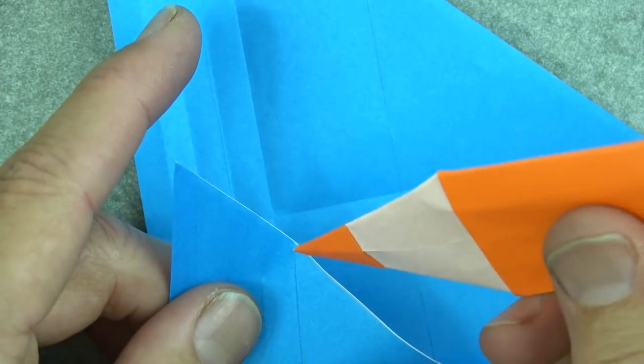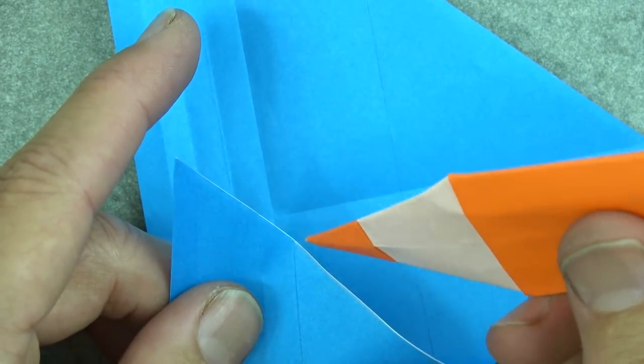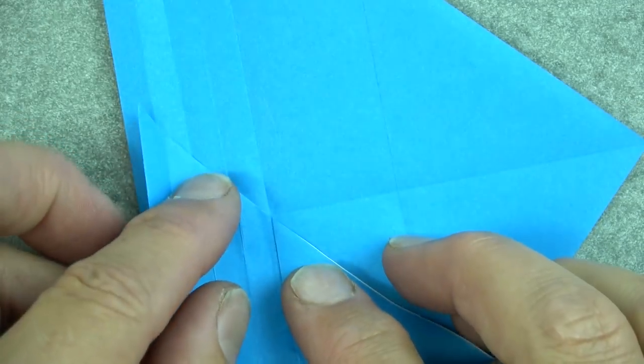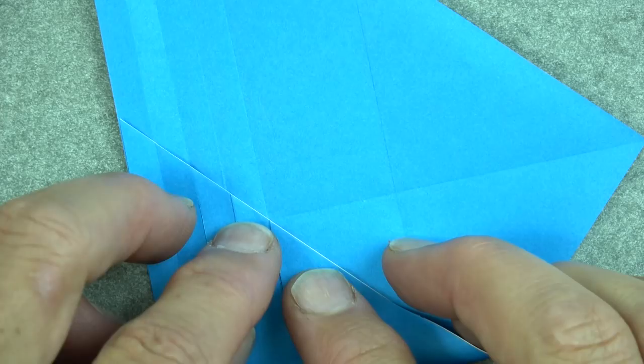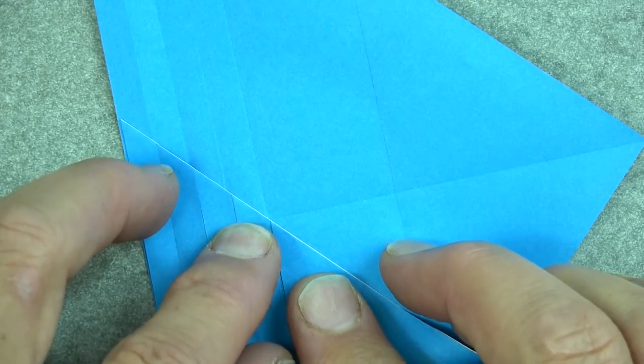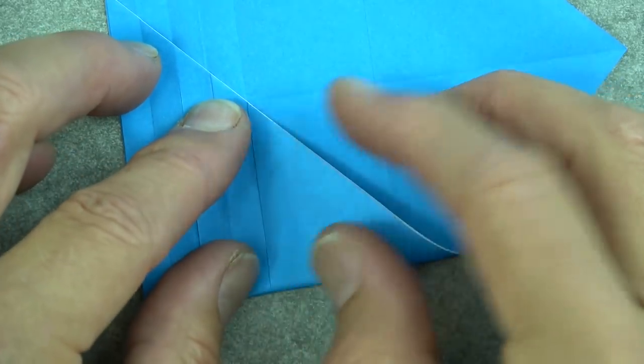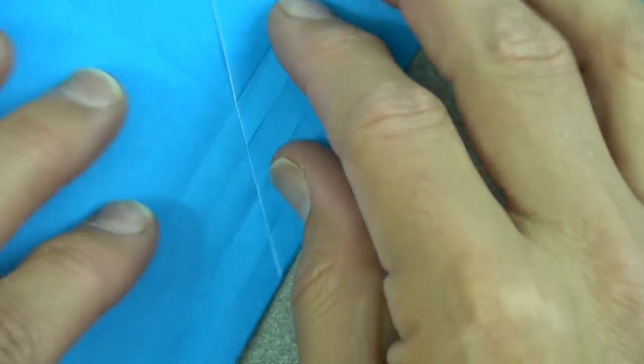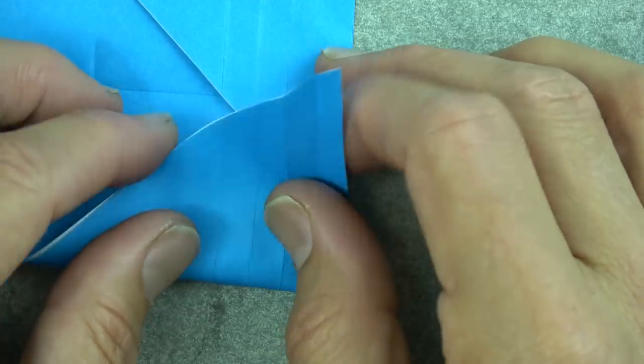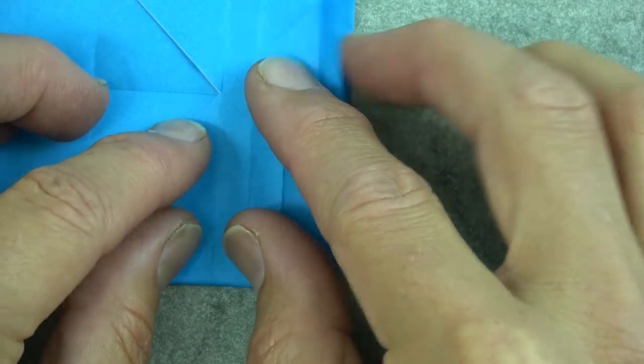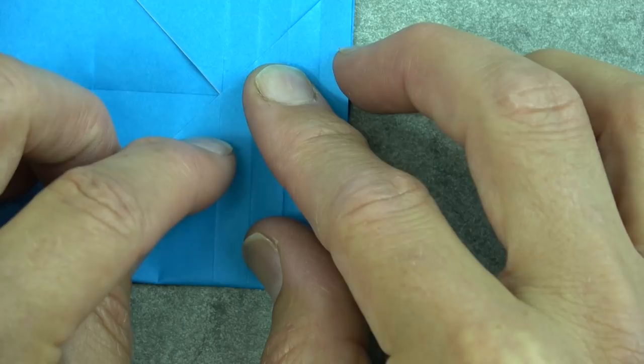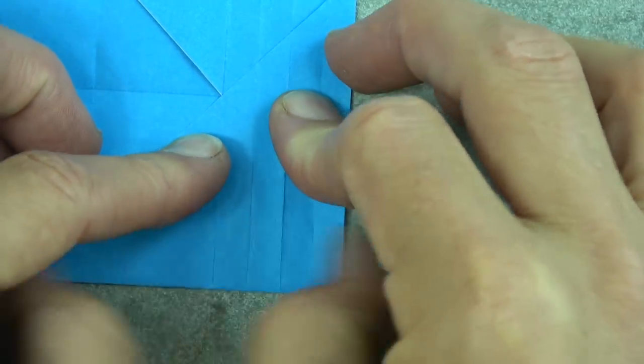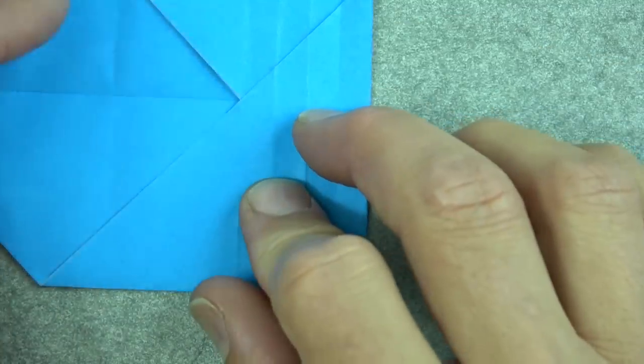And fold this flap up. How far? Well, we want this point right here where the crease hits the edge to touch this intersection point. So it's like that. And when it touches, make the fold. And now rotate and do the same on this side. So fold it up like that so that crease touches.